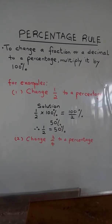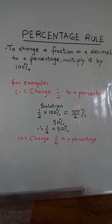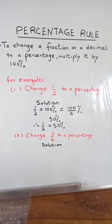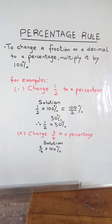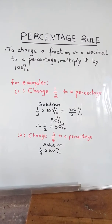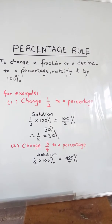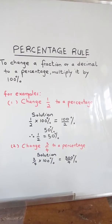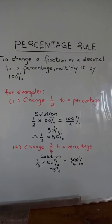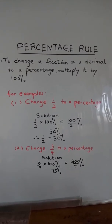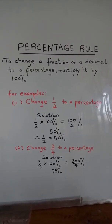Number two: change three over four to a percentage. Solution: we multiply three over four by 100 percent, which is equal to 300 over four percent. 300 divided by four is equal to 75, so three over four is equal to 75 percent.